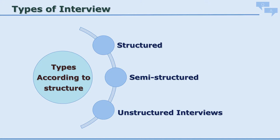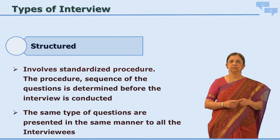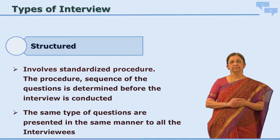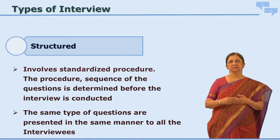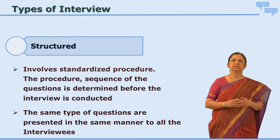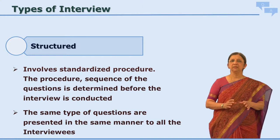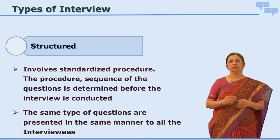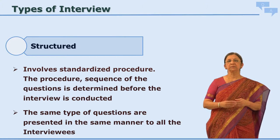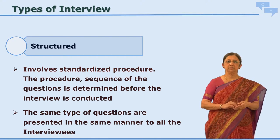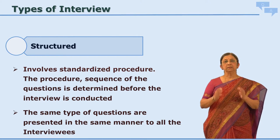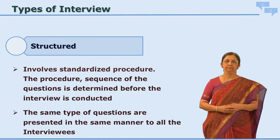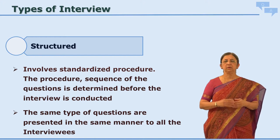Let us see the interviews classified as per their structure. There are three types: structured interview, semi-structured interview, and unstructured interview. In a structured interview, the name itself tells you it is very structured. Which questions to ask, how to ask, in what way to ask — everything is predetermined. The researcher, while preparing the interview guide or interview schedule, has already determined the sequence of questions and sometimes how to ask them. This means if you are interviewing 10 or 15 people, the same manner, same sequence, and same tone is used for all of them — the structure is observed for all respondents.